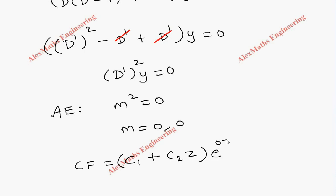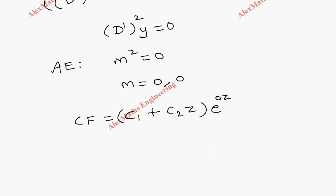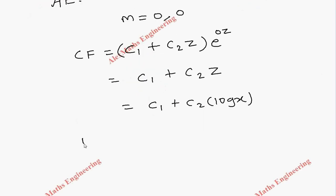So 0 z, e power 0 is 1, so we are left with only c1 plus c2 z. But z is log x, so c1 plus c2 log x.